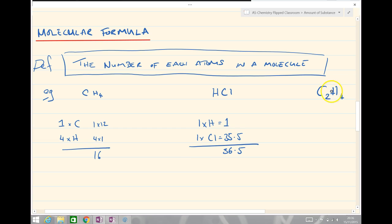And the final one, C2H4, ethene. We've got two carbons, four hydrogens, molecular mass of 28. Importantly though, it tells us the exact number of each atom in a molecule.